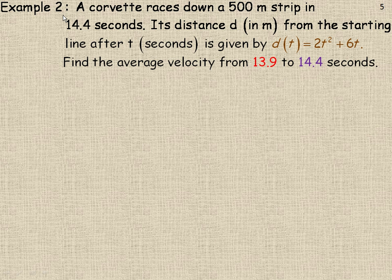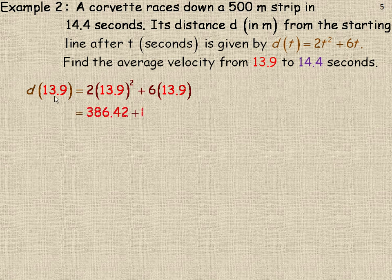Another example: a Corvette races down an approximately 500 meter strip in 14.4 seconds. Its distance d, measured in meters from the starting line after t seconds, is given by d(t) = 2t² + 6t. We're asked to find the average velocity from 13.9 to 14.4 seconds. We'll find the distance after 13.9 seconds: we fill in 13.9 in place of time, and 13.9 squared times 2 is 386.42, and 13.9 times 6 is 83.4. So the distance after 13.9 seconds is 469.82 meters.